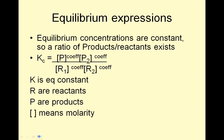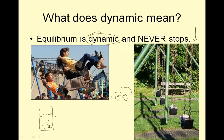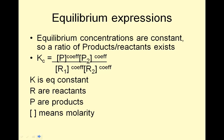Equilibrium expressions: equilibrium concentrations are constant, so a ratio of products over reactants exists. The formula is: product 1 raised to its coefficient times product 2 raised to its coefficient, over reactant 1 raised to its coefficient times reactant 2 raised to its coefficient, and so on. You could have more products or reactants than that.